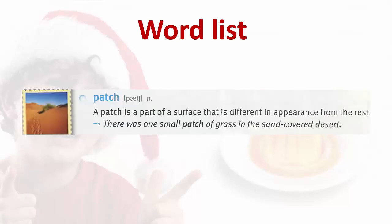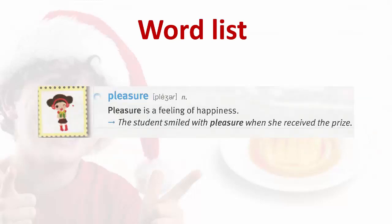Patch. A patch is a part of a surface that is different in appearance from the rest. There was one small patch of grass in the sand-covered desert. Pleasure. Pleasure is a feeling of happiness. The student smiled with pleasure when she received the prize.